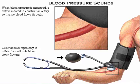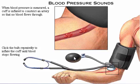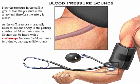When blood pressure is measured, a cuff is inflated to constrict an artery in the arm so that no blood flows through the artery. As the cuff pressure is gradually released but the artery is still partially constricted, blood flow resumes. Sounds can be heard with the stethoscope because the blood flows turbulently, causing audible sounds.